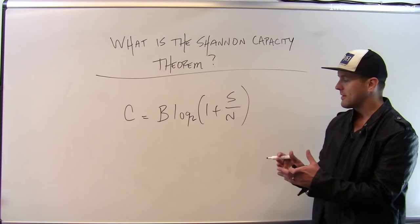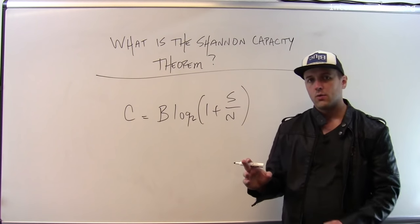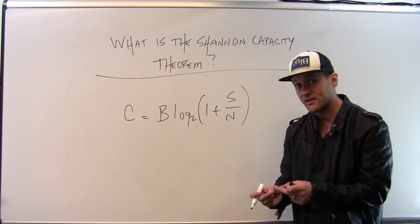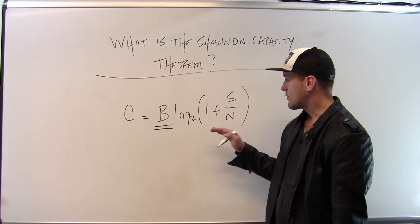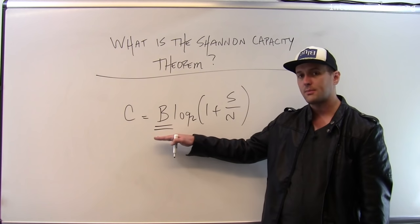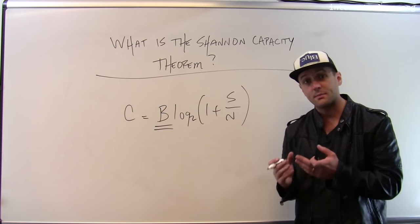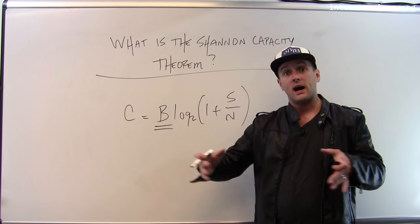One way to think about theorems like this is to look at them and think about what happens as we adjust different quantities. The first thing to notice is that for any link, regardless of the signal and the noise, the capacity is directly proportional to the bandwidth. This makes sense. If I have a wider bandwidth to communicate, I can send more data.